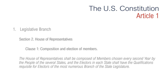Moving on to Section 2 about the House of Representatives. In Clause 1, it talks about the composition and election of members: 'The House of Representatives shall be composed of members chosen every second year by the people of the several states, and the electors in each state shall have the qualifications requisite for electors of the most numerous branch of the state legislature.' This means that every state has the power to decide who may vote for members of Congress within each state.